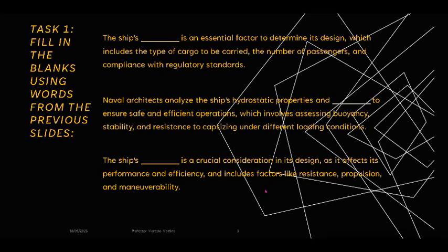The ship's underscore is an essential factor to determine its design, which includes the type of cargo to be carried, the number of passengers and compliance with regulatory standards. Naval architects analyze the ship's hydrostatic properties and underscore to ensure safe and efficient operations, which involves assessing buoyancy, stability and resistance to capsizing under different loading conditions. The ship's underscore is a crucial consideration in its design as it affects performance and efficiency, including factors like resistance, propulsion and maneuverability.